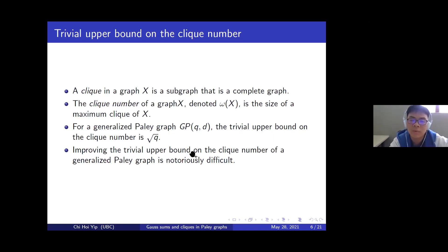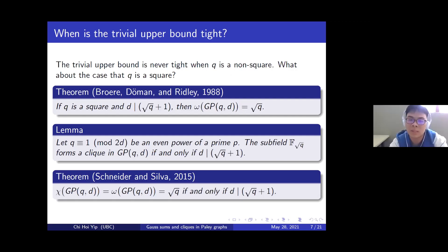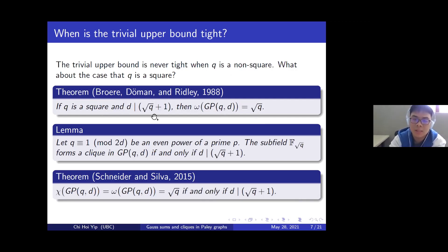Improving this trivial upper bound on the clique number is extremely difficult. Before trying to improve the bound, we should first ask: when is the trivial upper bound tight? There are two cases. The first case is that q is a non-square; in that case, the trivial upper bound √q is not an integer, so it is never tight. But if q is a square, it is possible that the trivial upper bound is tight. In fact, in 1988, Brouwer, Wilson, and Xiang showed that if q is a square and D divides √q + 1, then the clique number of GP(q,D) is given by √q. The key lemma is that the subfield with √q elements forms a clique in GP(q,D) if and only if D divides √q + 1.